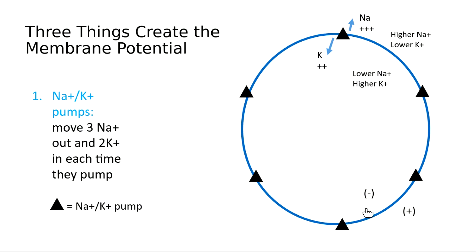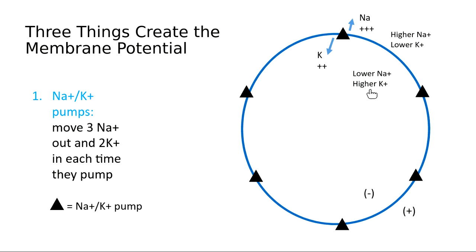That difference alone is enough to give us a difference in charge on the two sides of the membrane whereby the inside is negative relative to the outside. Also remember that as the sodium-potassium pumps continuously pump sodium out and potassium in, we get a concentration gradient: sodium is at a higher concentration outside the cell and lower inside, while potassium is at a higher concentration inside and lower outside.